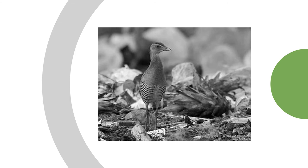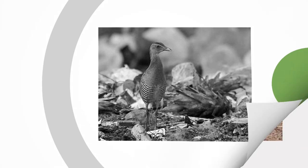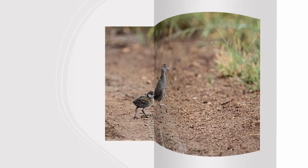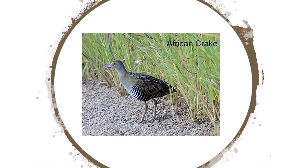Vertebrate prey such as small frogs or fish may also be taken. Plant material is eaten, especially grass seeds, but also green shoots, leaves and other seeds. The crake searches for food both within vegetation and in the open, picking insects and seeds from the ground, turning over leaf litter, or digging with its bill in soft or very dry ground.